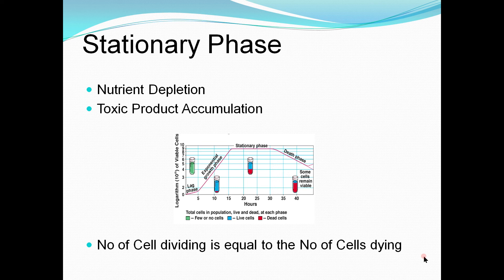The next phase is the stationary phase, in which nutrients become depleted and toxic products accumulate. The population growth experienced in the log phase begins to decline as nutrients become depleted and waste products accumulate. Bacterial cell growth reaches a plateau where the number of dividing cells equals the number of dying cells — there is no overall population growth. Spore-forming bacteria form endospores in this phase, and pathogenic bacteria generate virulence factors to survive these harsh conditions and cause disease.